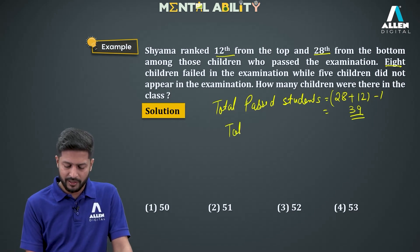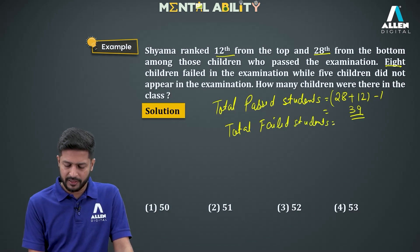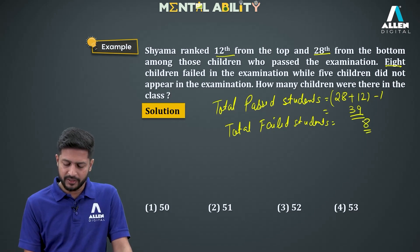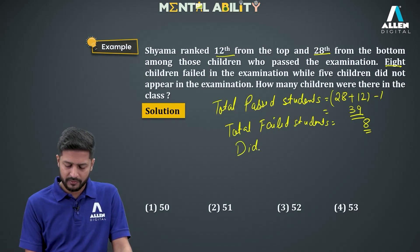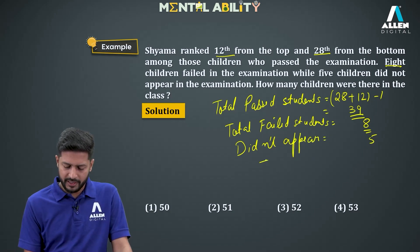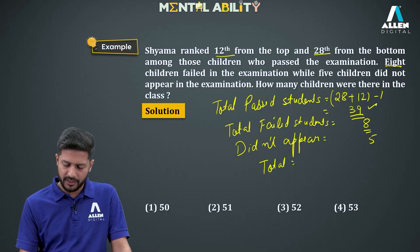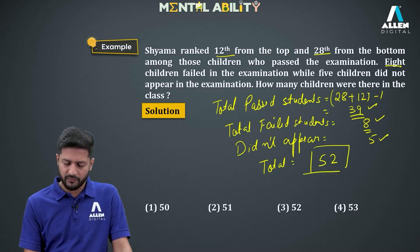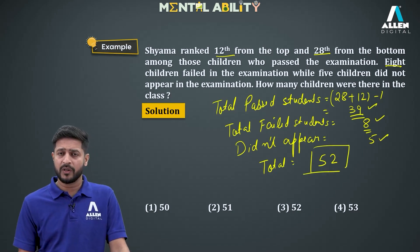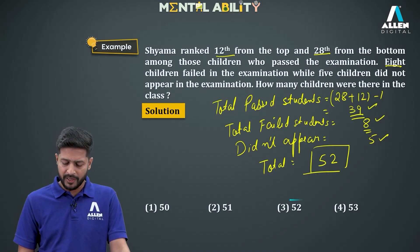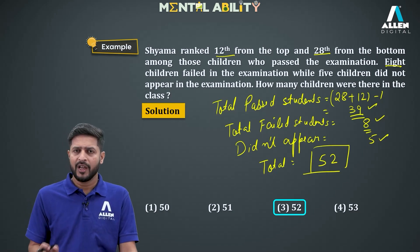The question also states that 8 children failed the examination and 5 children did not appear. To find the total number of children in the class, we add: 39 (passed) + 8 (failed) + 5 (did not appear) = 52. The total number of children in the class is 52, which is option 3.